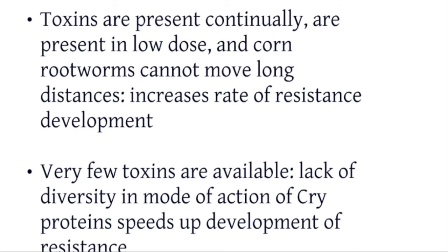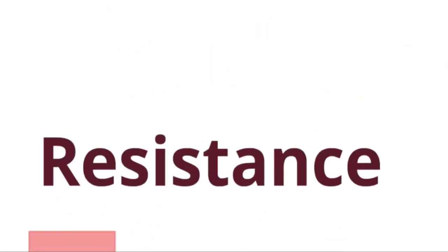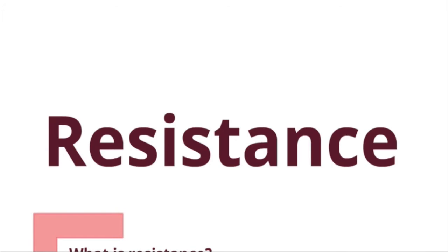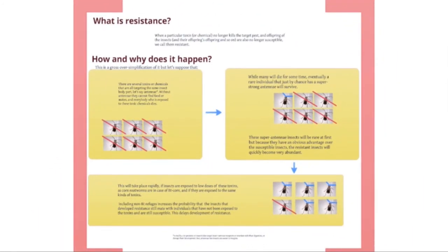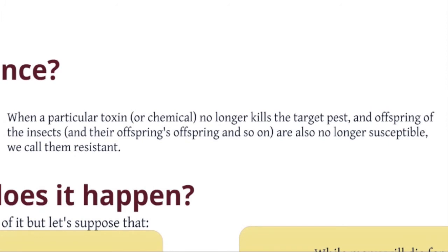This brings us straight to the issue of resistance. We're going to talk very briefly about what resistance is, how it develops, and what we can do to manage it. When a particular toxin or synthetic chemical no longer kills the target pest, and offspring of the insect and their offspring's offspring are also no longer susceptible, we call them resistant. This point about offspring's offspring also no longer being susceptible is very important because this trait has to be passed on through generations — it has to be a heritable trait.